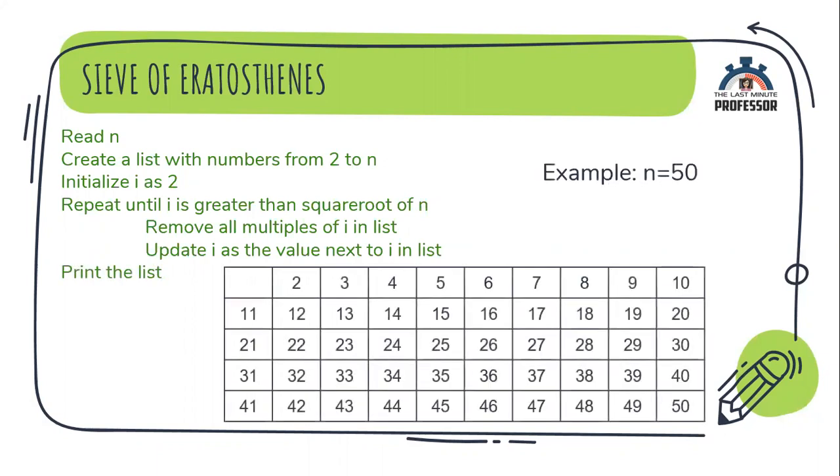Consider an example, n is equal to 50. Note on all the numbers from 2 to 50. i is initialized to 2. Now the condition to be checked is, is i less than or equal to square root of 50? That is, is 2 less than or equal to 7 point something? Yes, it is true. It is nothing but you are taking the first available prime number, that is 2 and removing all the multiples of 2.